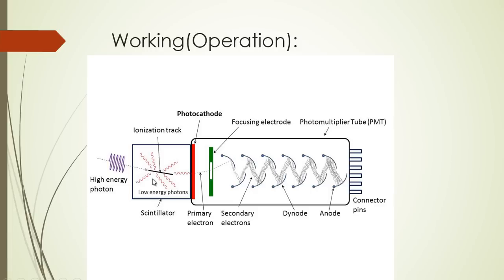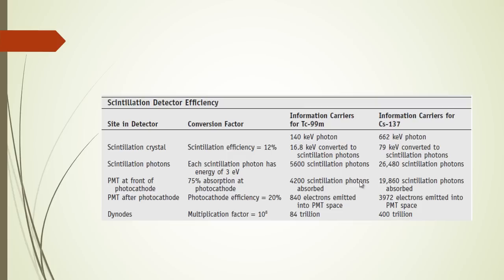Whatever the amount of energy absorbed by the scintillator, the number of photons emitted by the scintillator is directly proportional to the energy absorbed. Therefore, the pulse we get from the photomultiplier tube is also directly proportional to the energy deposited to the scintillator. Keep in mind that the pulse is proportional to the energy deposited — not necessarily the energy of the incident photon — since the deposited energy depends on the type of interaction the photon has with the material.